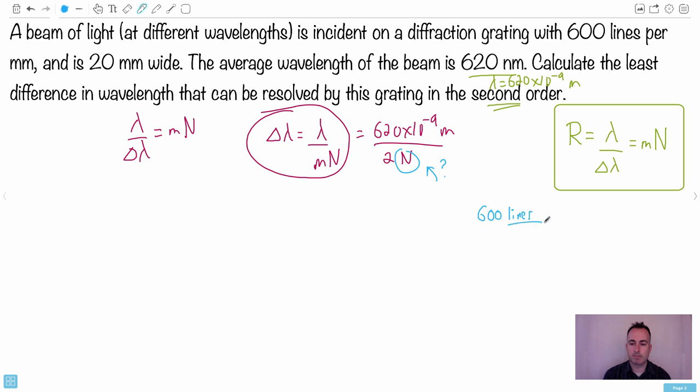Lines. I'm going to actually just put the units like this: lines per millimeter. You could convert this to meters, but watch carefully, I don't think you have to. If you know it's this wide, can you see that if I multiplied by this number, 20 millimeters, do you notice what would happen? I would end up canceling out the millimeters and getting an answer of lines, which is what I wanted for N in the first place.